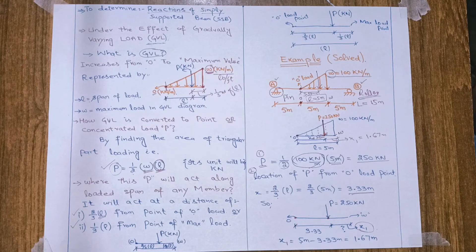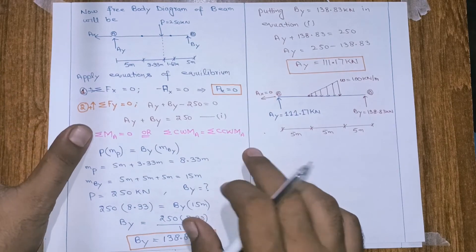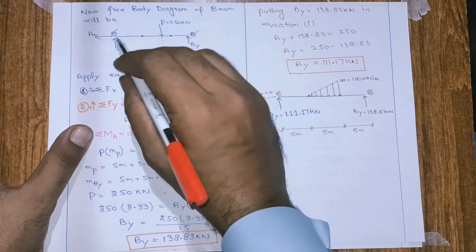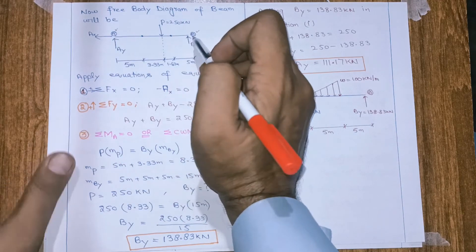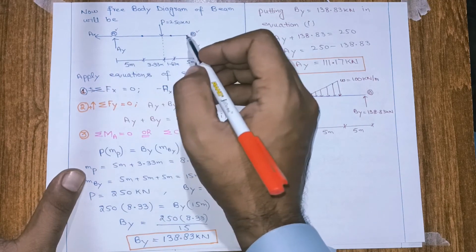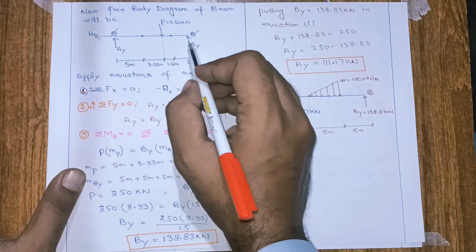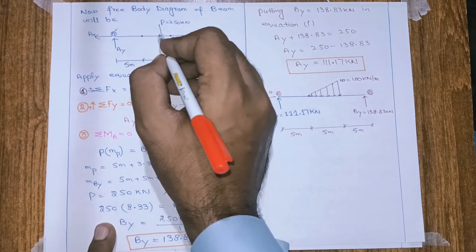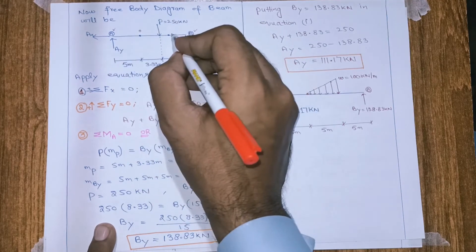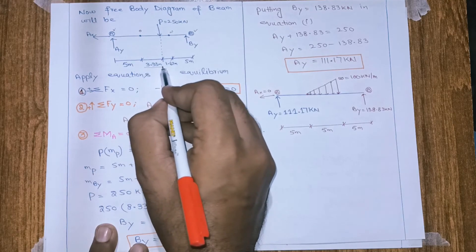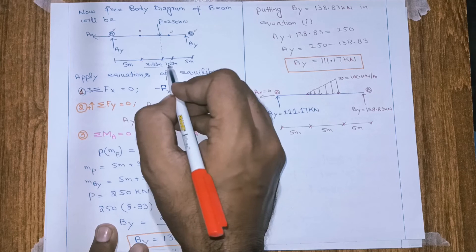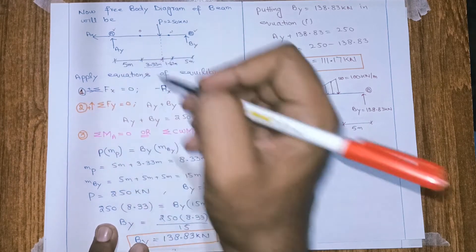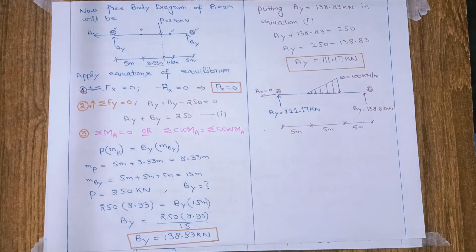Now we can draw the free body diagram of the beam as shown on this page. Points A and B are the supports: at point A there is a pin support giving two reactions — one vertical and one horizontal — and at point B there is a roller support giving only one vertical reaction, BY. The load P acts at 3.33 meters from the zero load point and 1.67 meters from the maximum load point. The next span is 5 meters and the remaining span is also 5 meters.